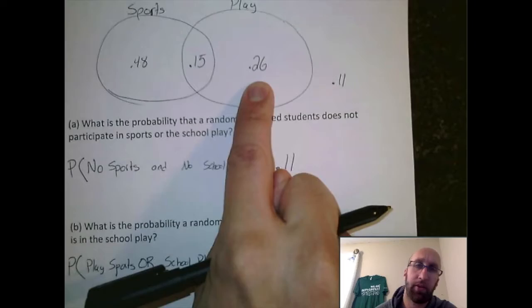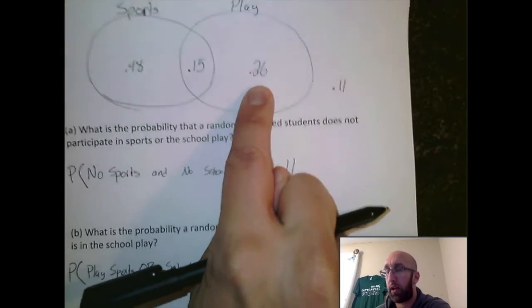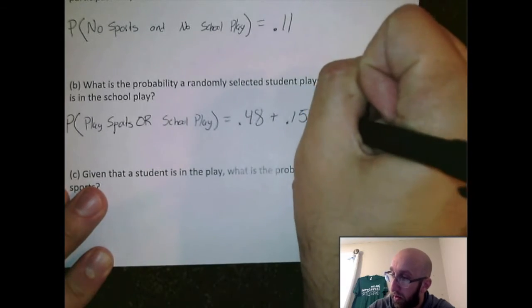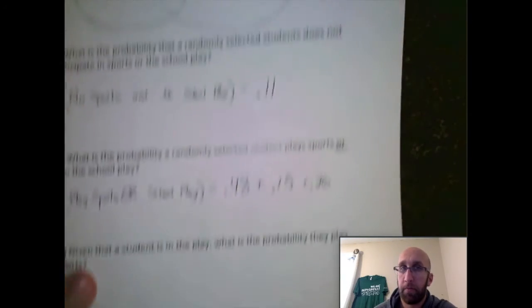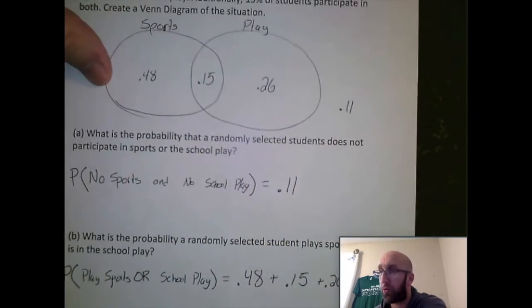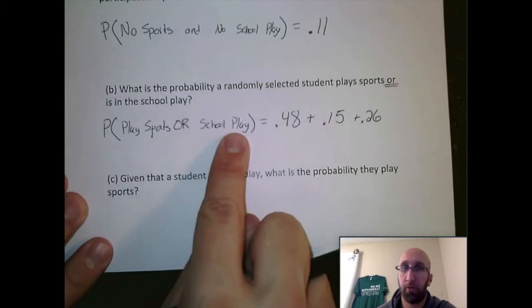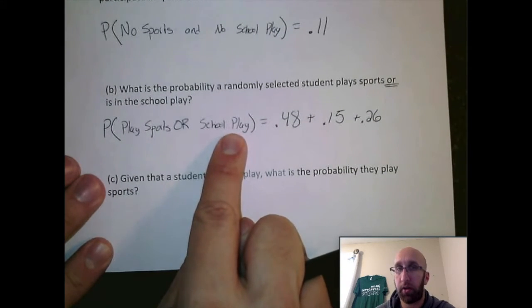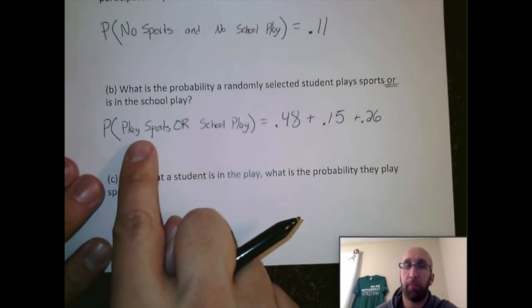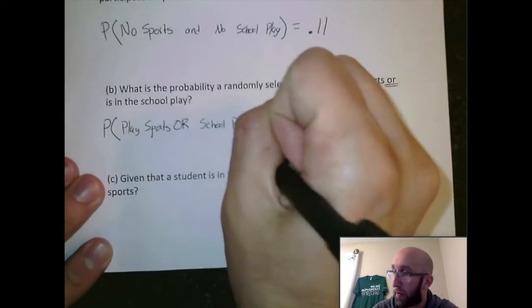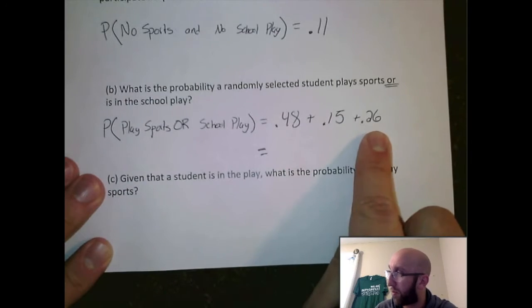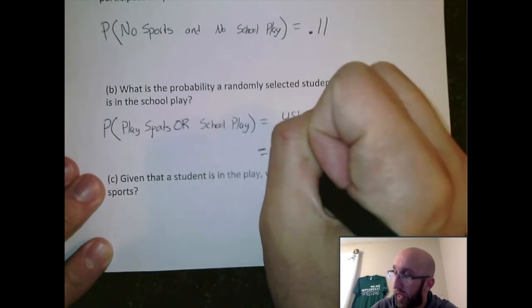The next number, .26, represents students that only do the school play, and that follows what we're trying to look for. They play sports or the school play. The .11 outside would not fall under play sports or school play, so we aren't going to include it. We just need to add up these three numbers, which represents the probability that you select a student that plays sports or the school play. If you take .48 plus .15 plus .26, you get .89.